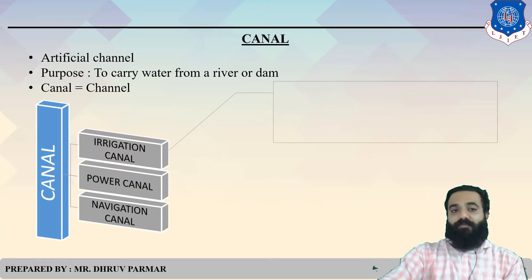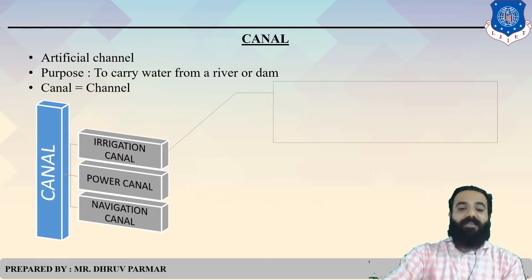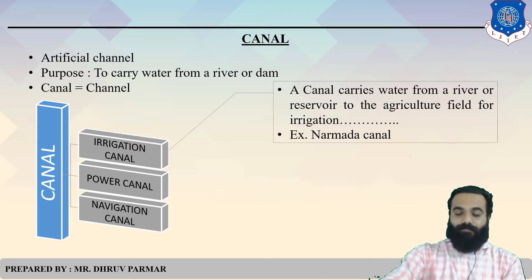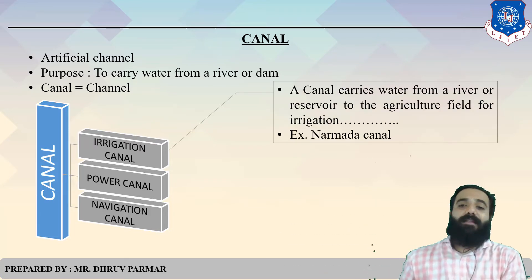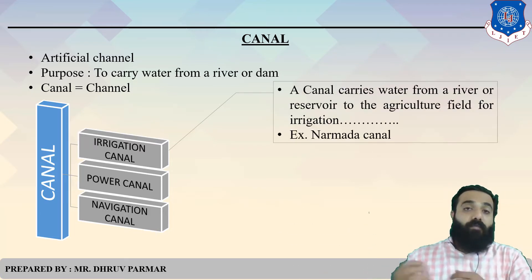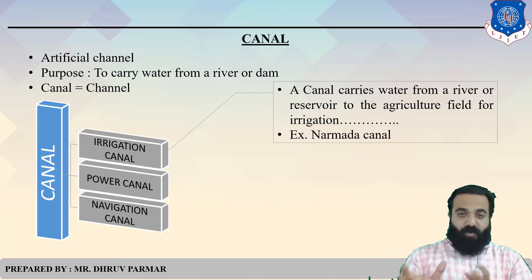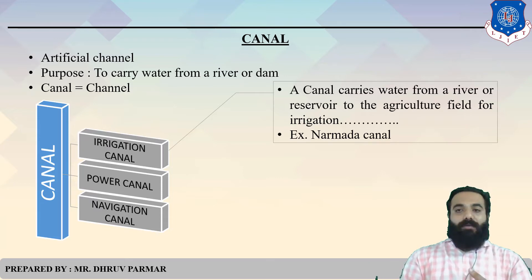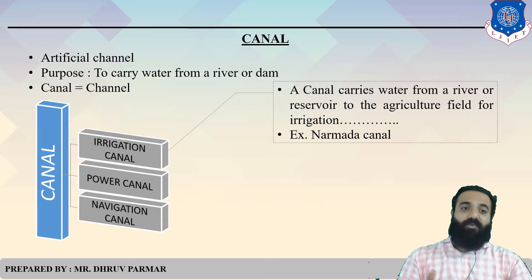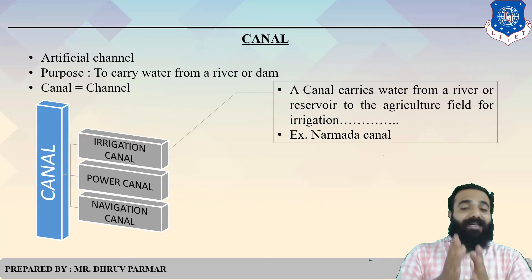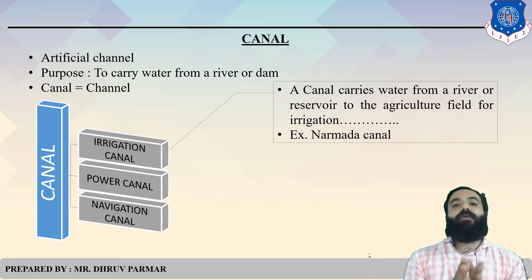There are three types of canal. The first is Irrigation Canal — a canal that carries water from a dam or reservoir to the agricultural field for irrigation purposes. That is called an Irrigation Canal.